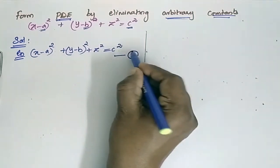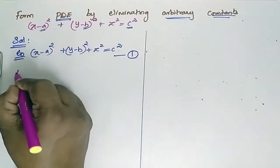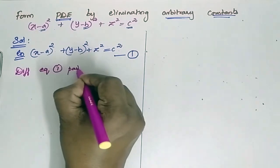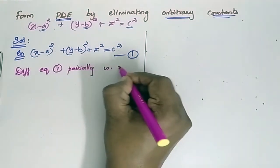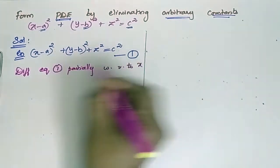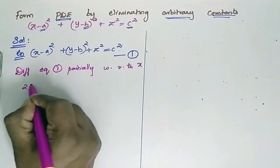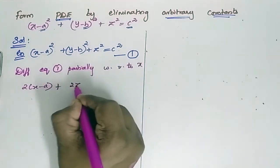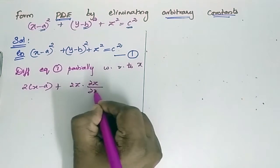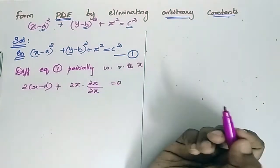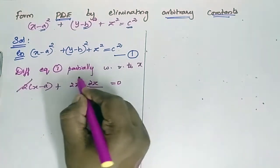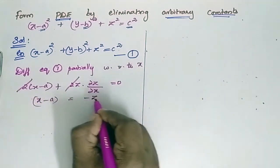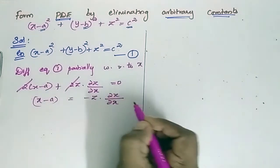Let this be equation 1. Now differentiate equation 1 partially with respect to X. Differentiating gives 2 into (x minus a) plus 2z times ∂z/∂x equals 0. Simplifying, the 2s cancel, so x minus a equals minus z times ∂z/∂x.